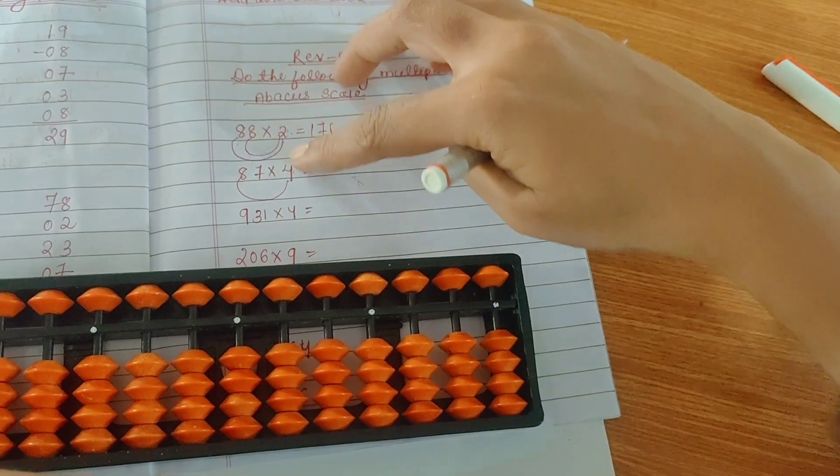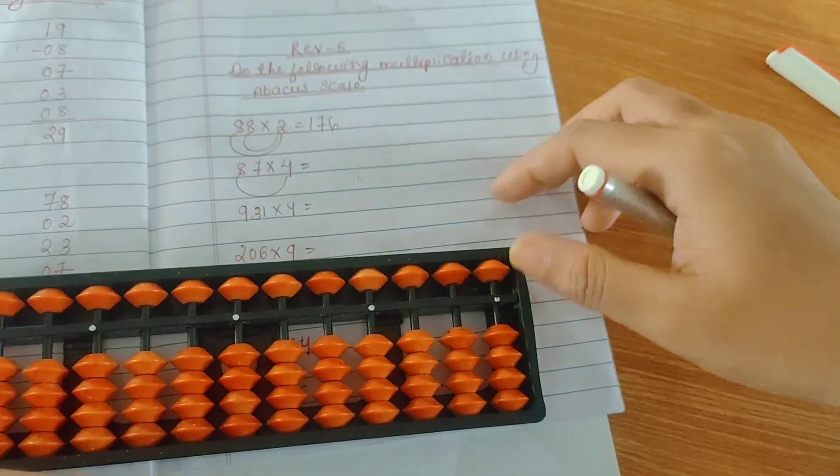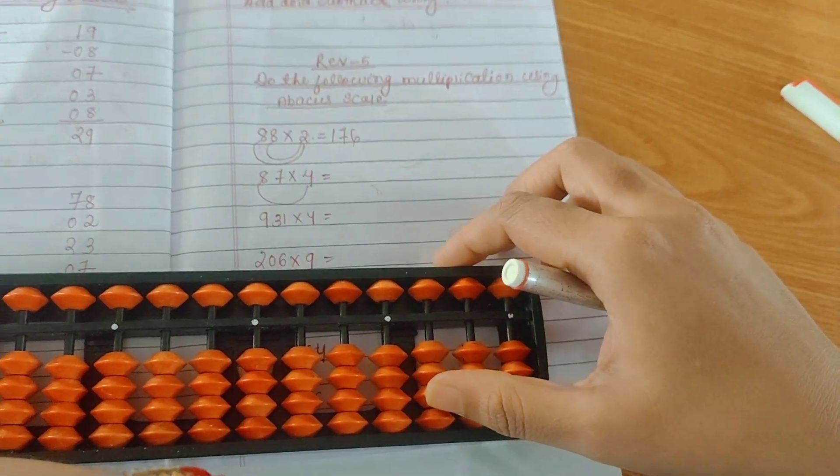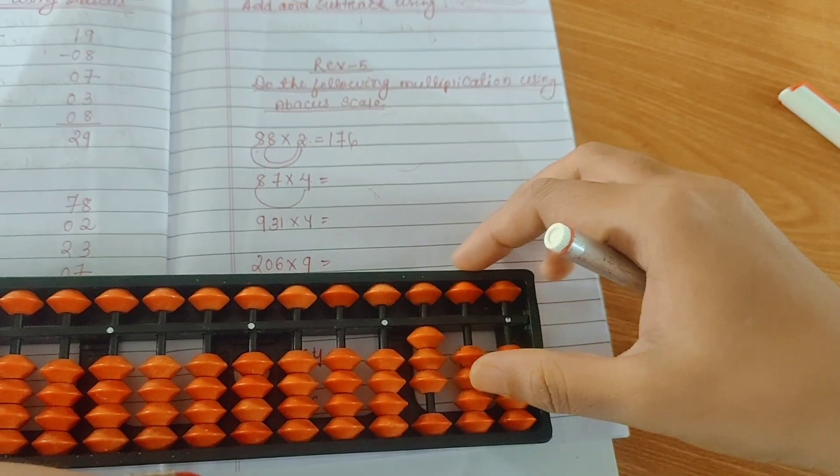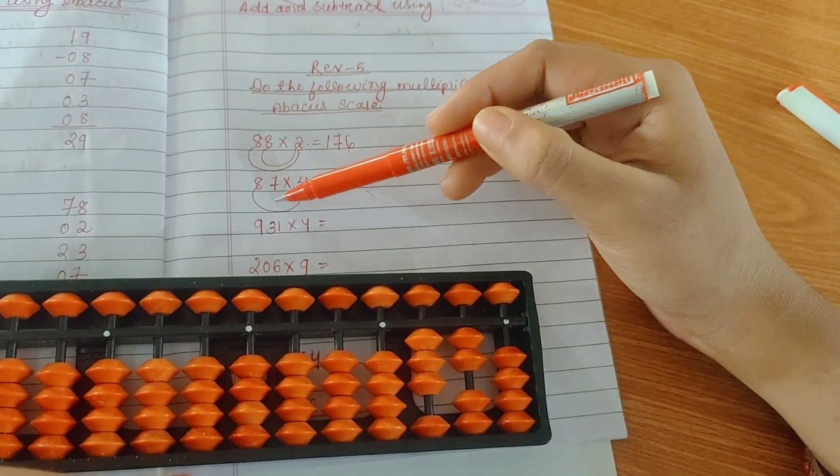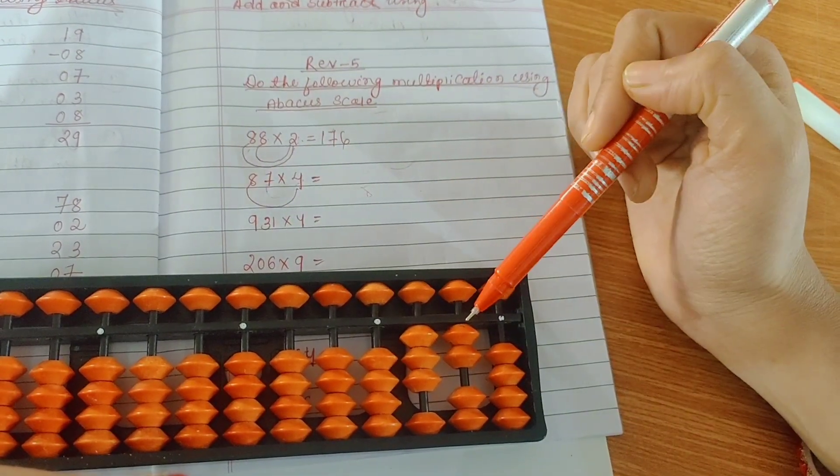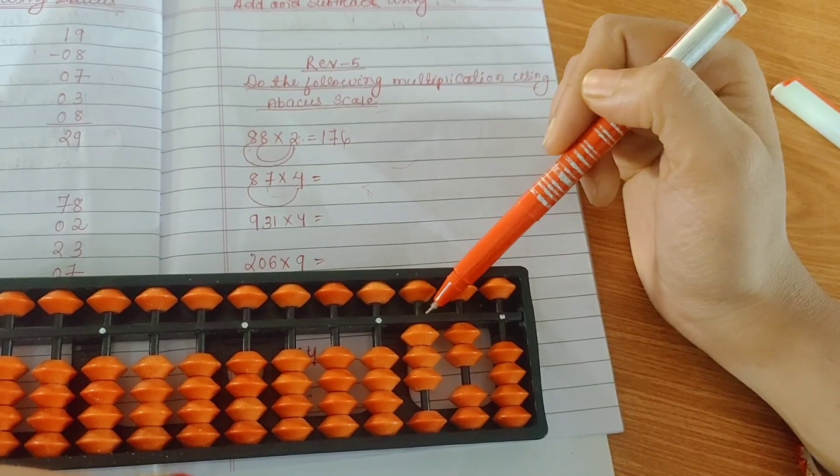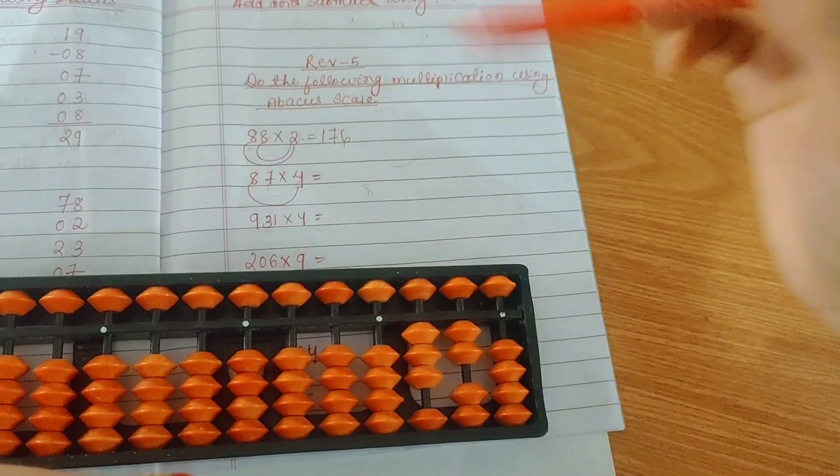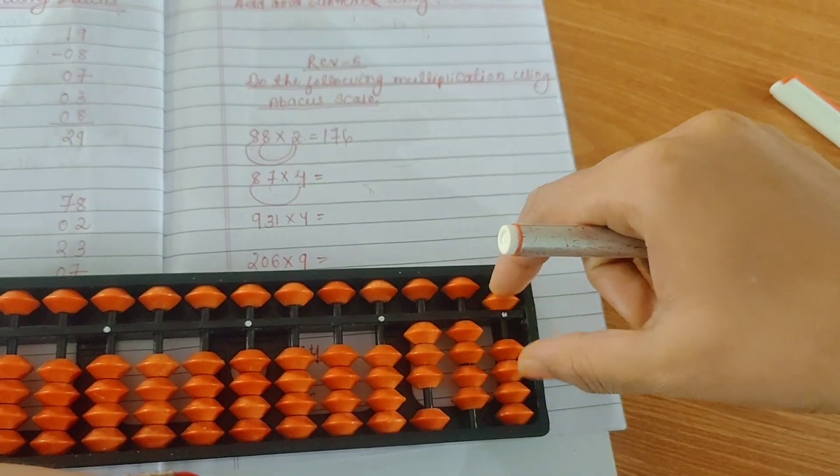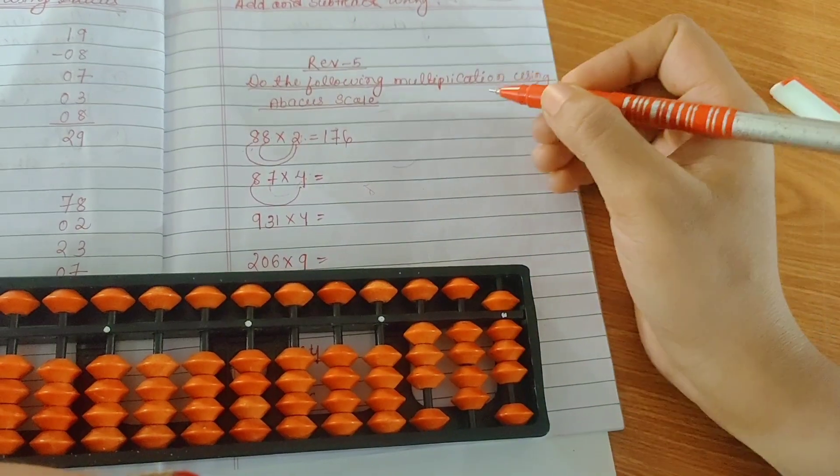See the next question. 4 times 8 is 32. Start the answer from third row: 32. Next, you will multiply 4 with 7. Since you're multiplying the second number, start from the second row, skipping the first row. 4 times 7 is 28. The answer is 348.